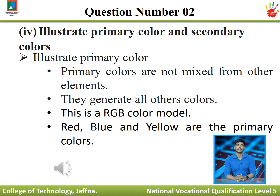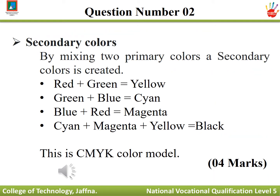Question number four: illustrate primary colors and secondary colors. Primary colors are not mixed from other colors — they generate all other colors. In the RGB color model, red, blue, and yellow are the primary colors. Secondary colors are created by mixing two primary colors: red plus green equals yellow; green plus blue equals cyan; blue plus red equals magenta. Cyan plus magenta plus yellow equals black — this is the CMYK color model.